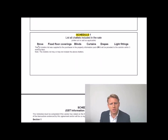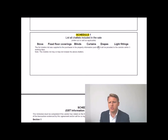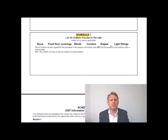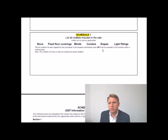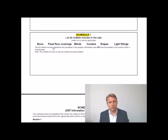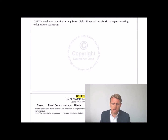You basically want to go through the chattels and ideally have a separate list, because it gets very confusing — blinds, curtains, drapes — the differences are hard to define. So you want a separate chattels list. For example, we put a clause stating the full chattels list was provided to the purchaser in the property information pack, and we'll get someone to initial it, or it will be provided to the solicitor within three working days. Make sure you go through the chattels and include that clause.